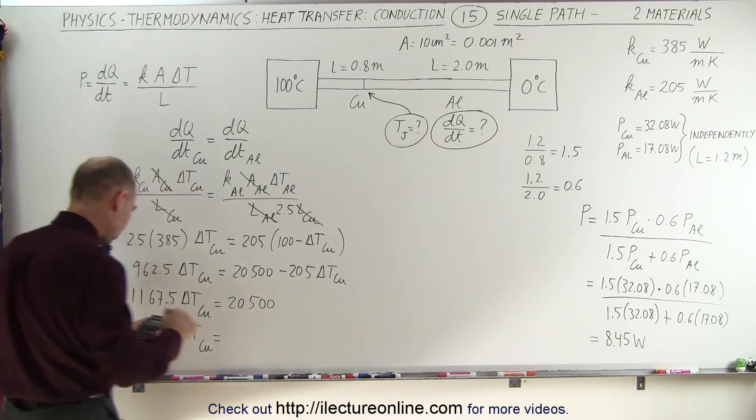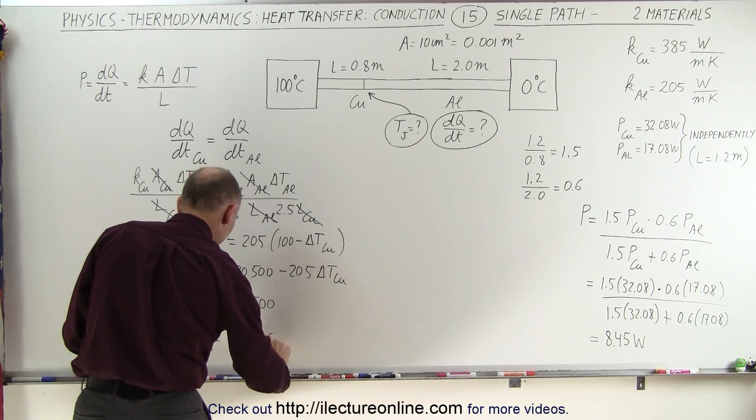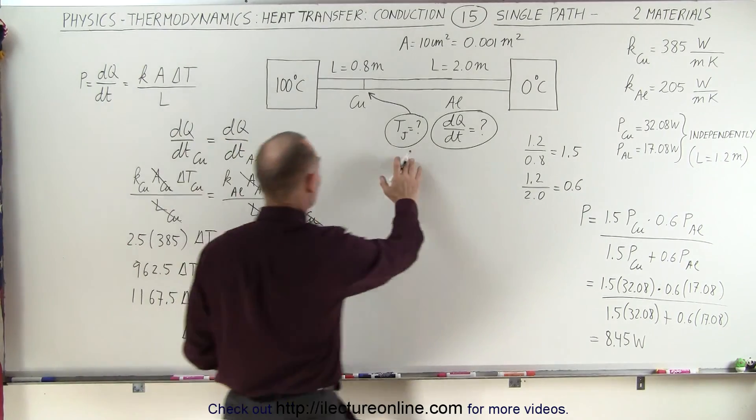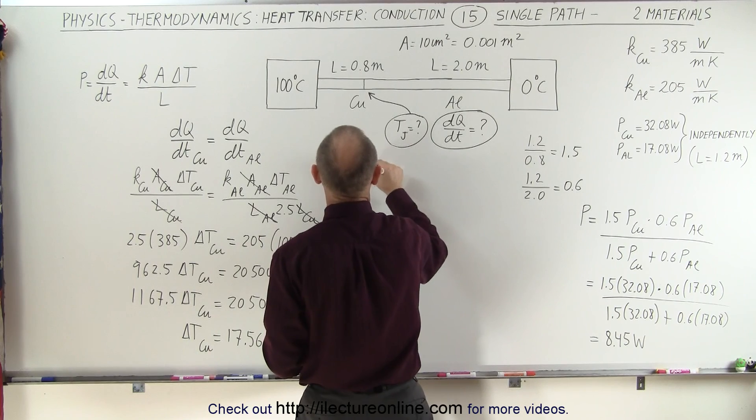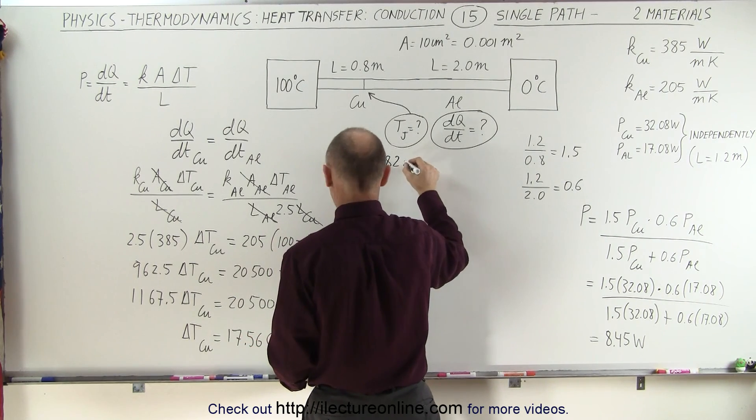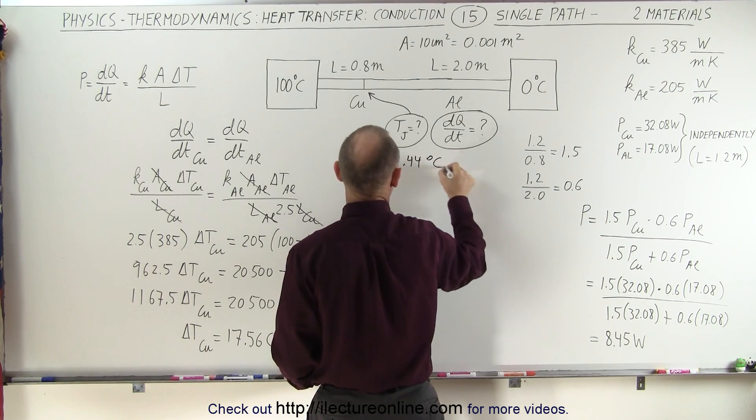And we get 17.56 degrees centigrade. All right, that means we can now find the junction temperature in this case, it's 100 minus that. So T junction is equal to 82.44 degrees centigrade, because it's an actual temperature.